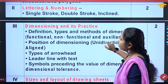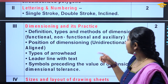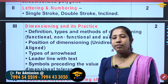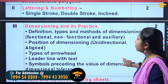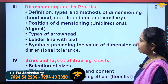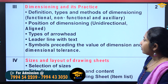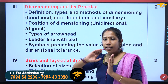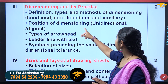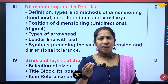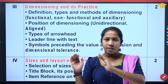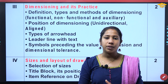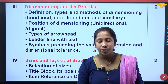Lettering and Numbering — single stroke, double stroke, inclined. The weightage is 2 marks. The next one is Dimensioning and its Practice. Dimensioning — definition, types and methods of dimensioning. Functional, non-functional, and auxiliary dimensioning. We will learn 2 types of dimensioning: aligned and unidirectional.